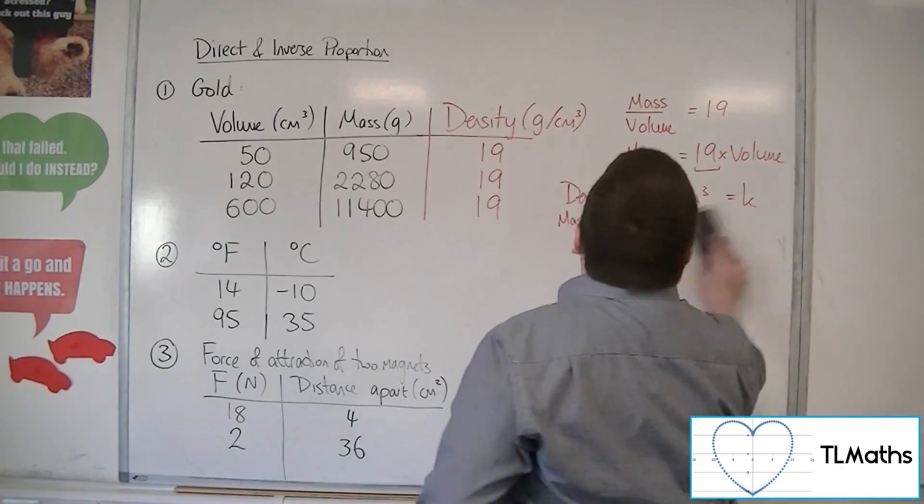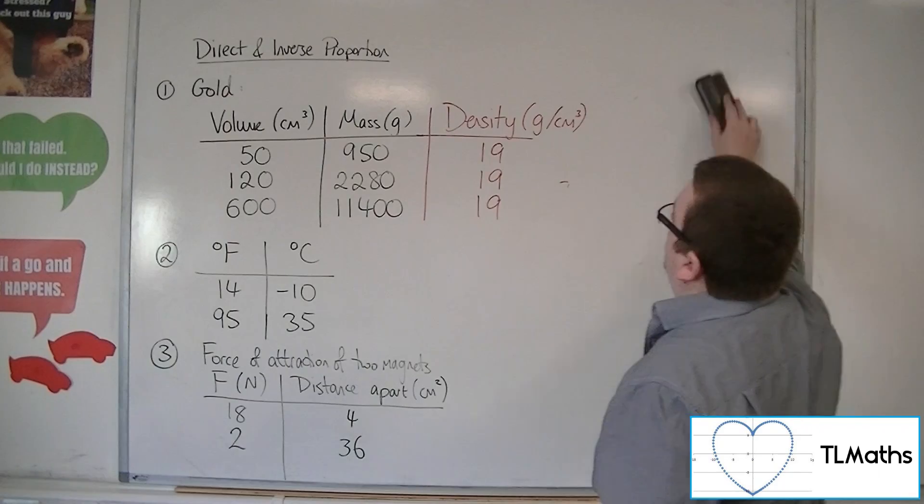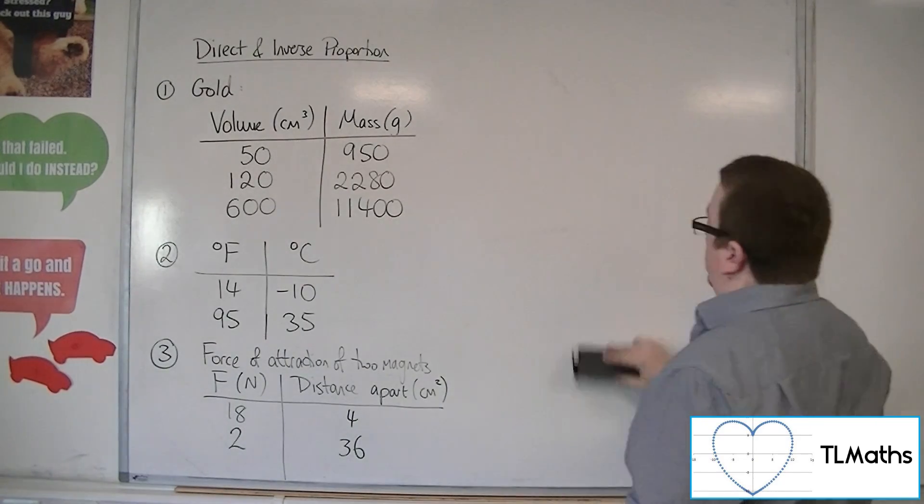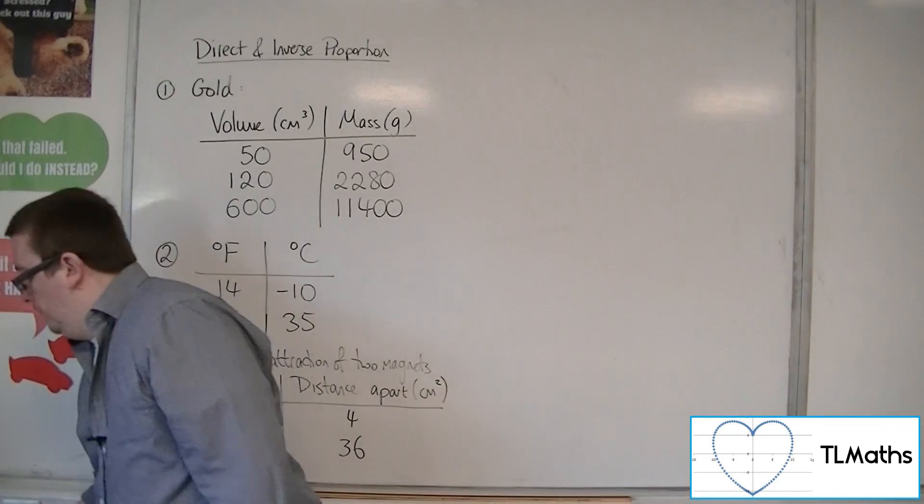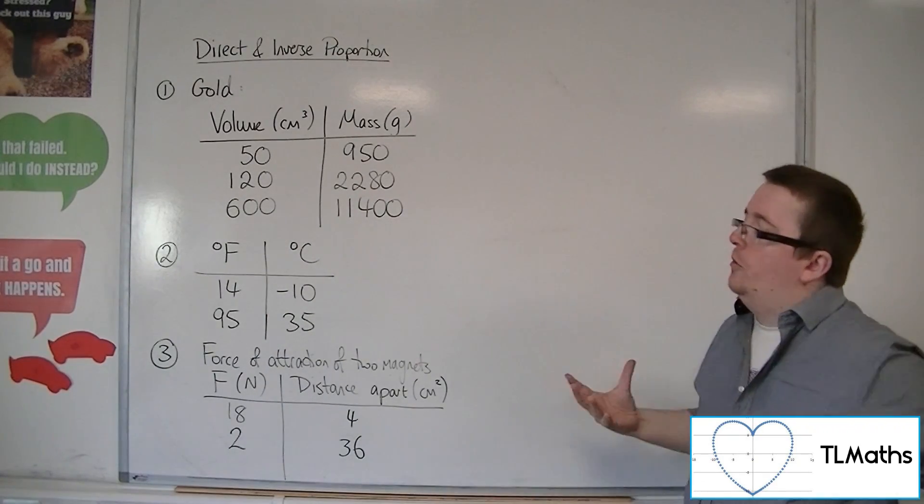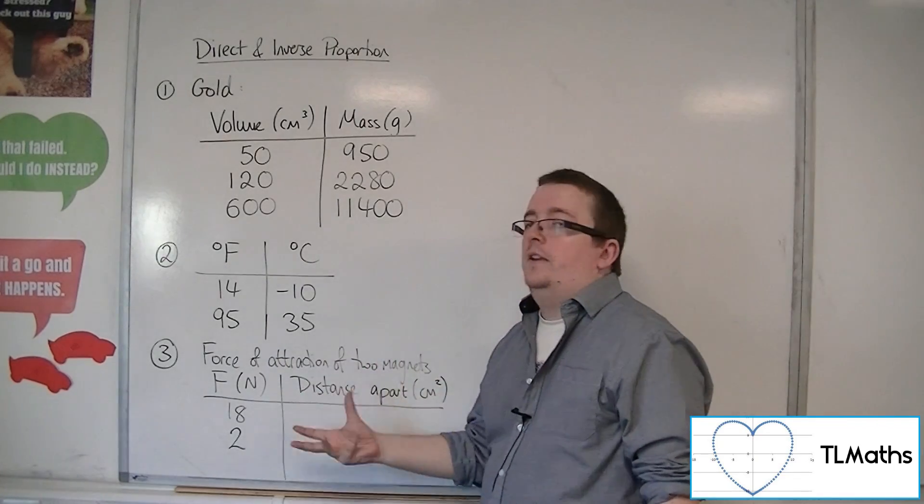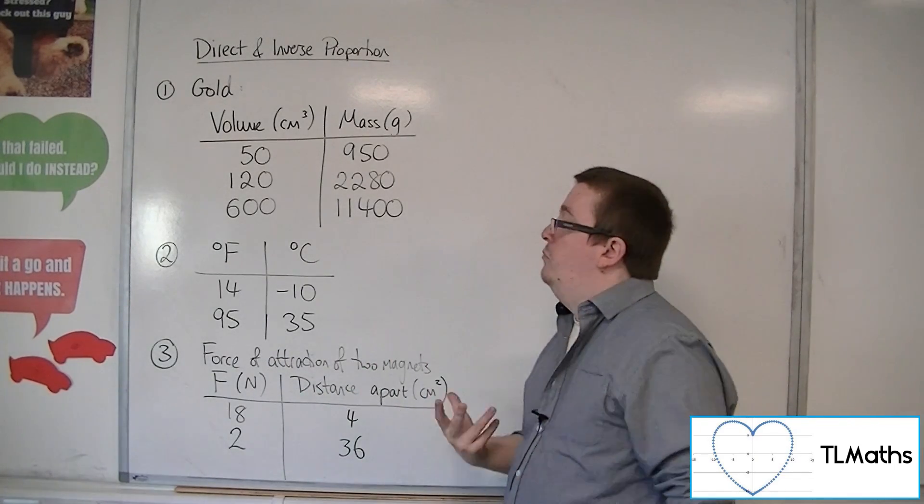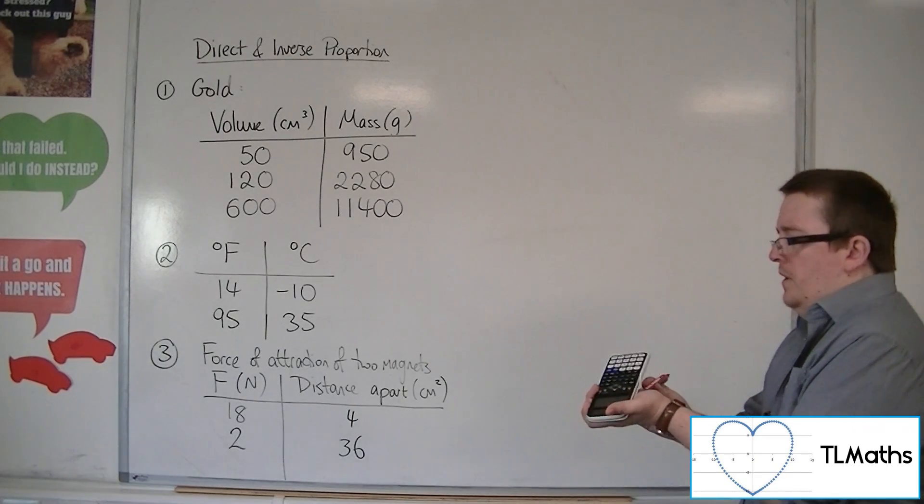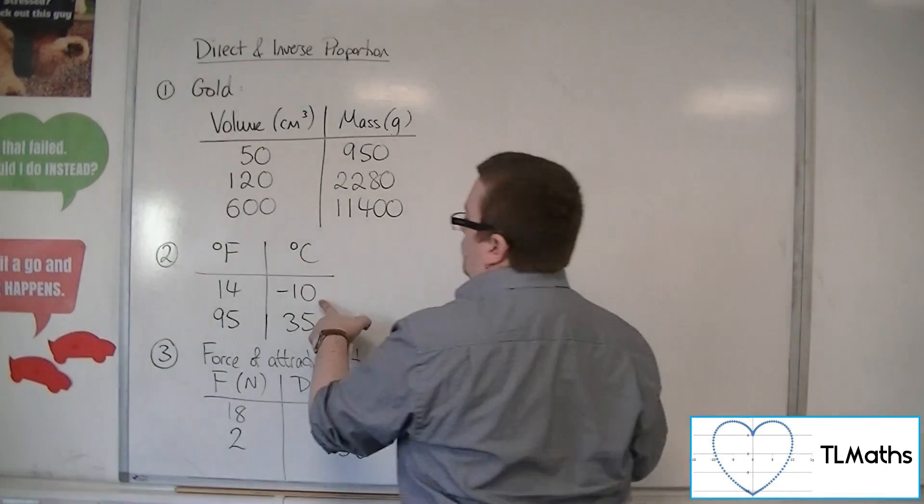So in this second example, we've got degrees Fahrenheit and degrees Celsius. And what I want to do in this case is just to show that these two things aren't directly proportional. So if I, let's say, I divide one by the other.